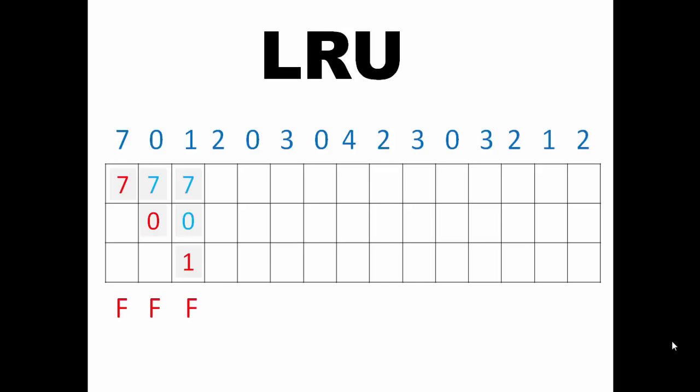Green color is used for page hits. Now the page frame is full and the next page is 2, which is not in the page frame, so we need to remove one page. Looking at the history, 1 is the most recently used, then 0, then 7 — so 7 is the least recently used and will get removed. 2 will get added and there will be a page fault; 0 and 1 will remain.